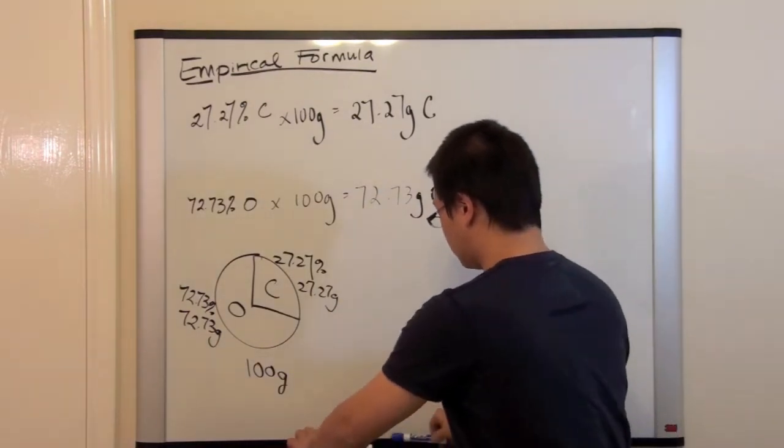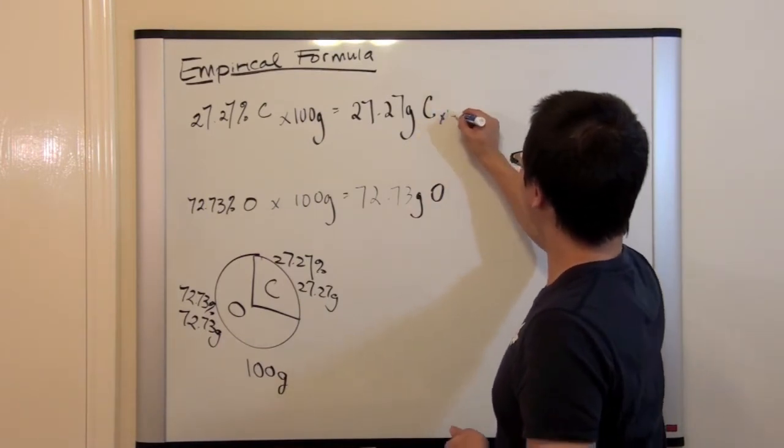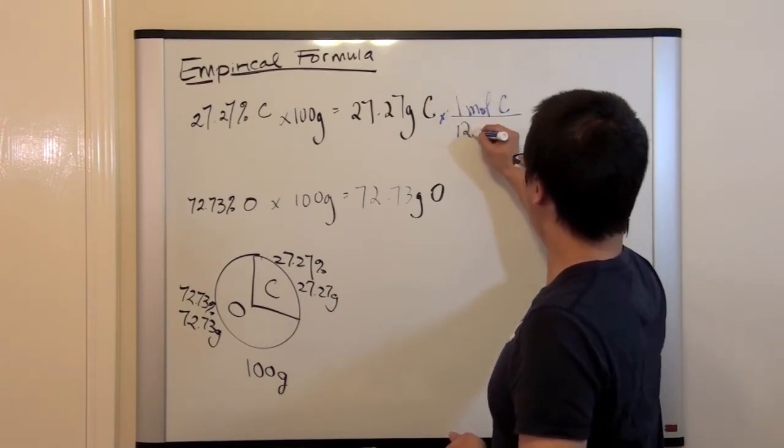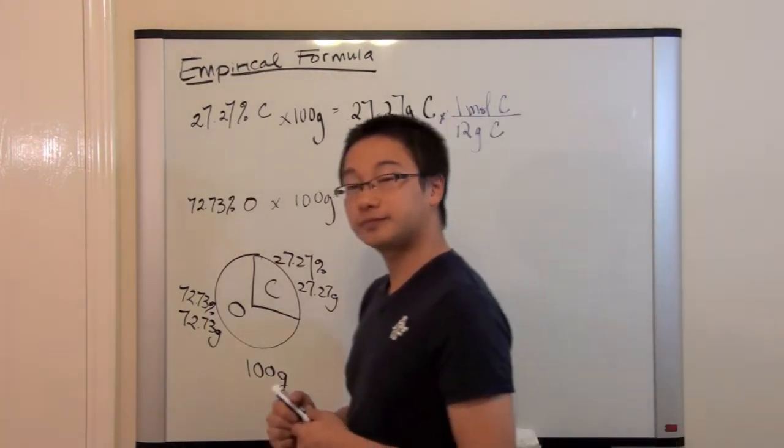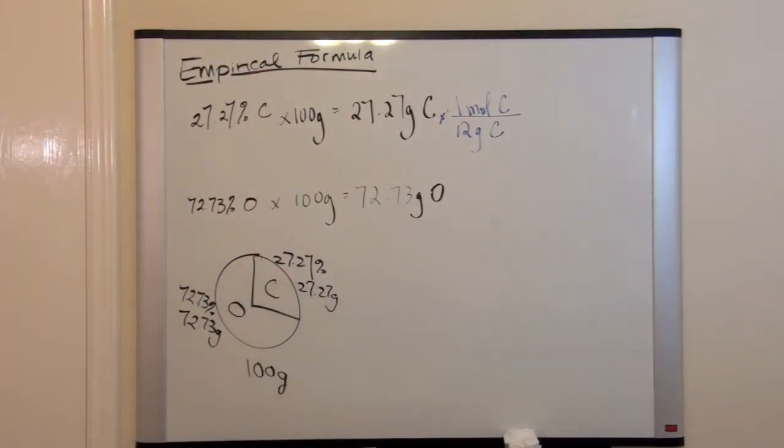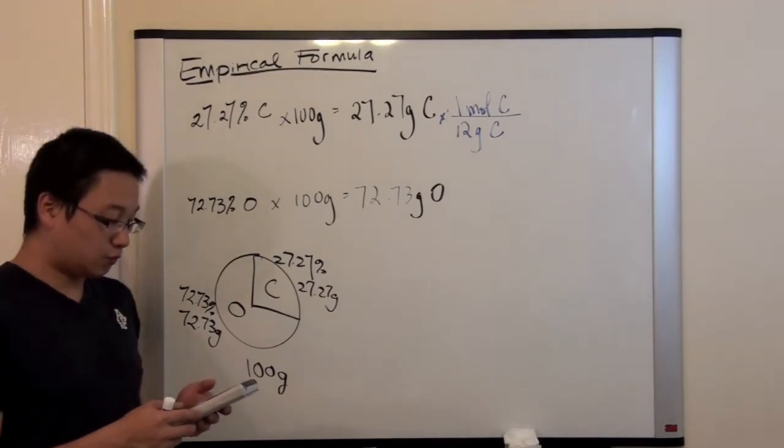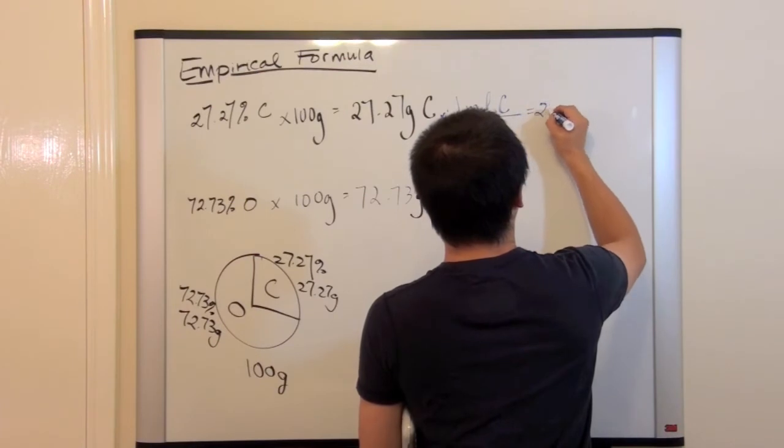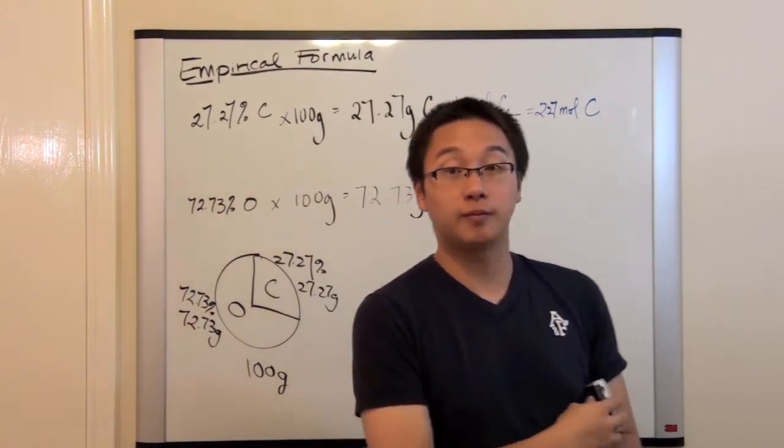And I'm going to use a different color so that you can see it easier. Multiply by one mole of carbon, 12 grams of carbon. And let me use my calculator. And when we do the division, we will have 2.27. We have 2.27 moles of carbon.